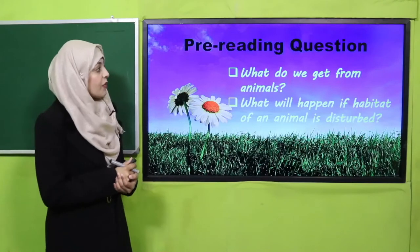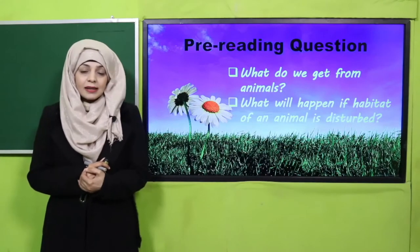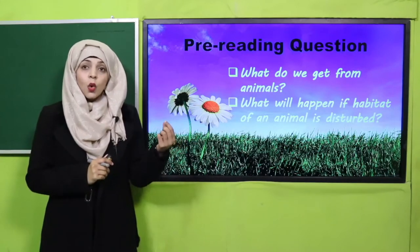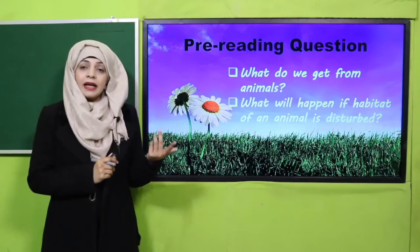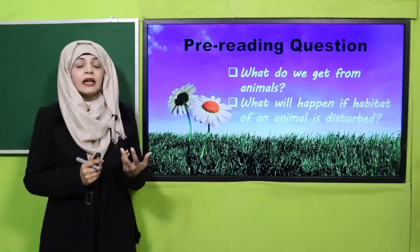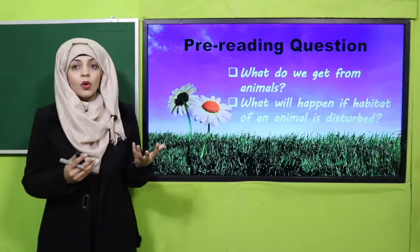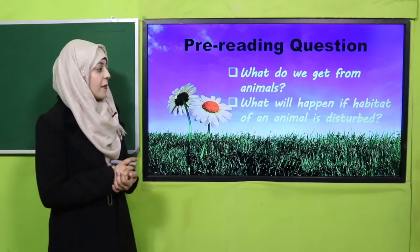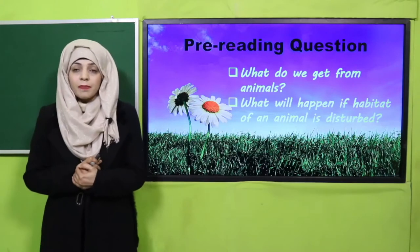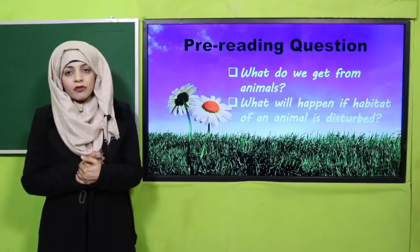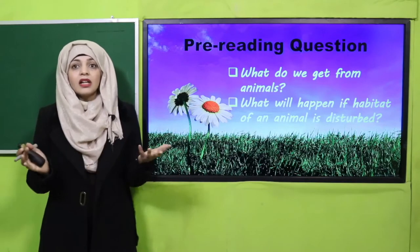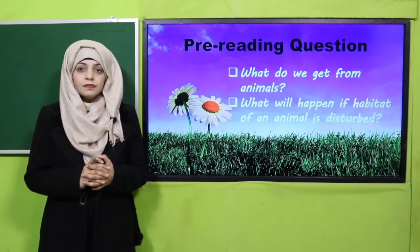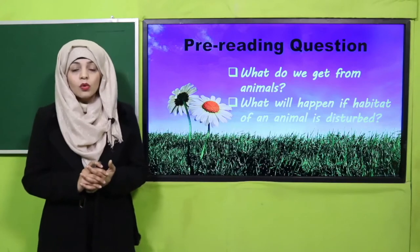My dear students, quickly answer a few questions before we move on to the reading. What do we get from animals? We get many things from animals — meat, milk, eggs — and their skin is also used. There are multiple ways we get benefits from animals. What will happen if the habitat of an animal is disturbed? If anyone's natural home or habitat is disturbed, obviously their life will be under threat.